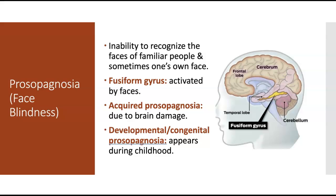Oliver Sacks, the neurologist and author, had prosopagnosia and had difficulties recognizing his own face. The reason this occurs is found in the temporal lobe — a region called the fusiform gyrus, which becomes activated when we look at a face and allows us to recognize others' faces and our own. This disorder can be acquired — meaning it's due to brain damage or deterioration — or it can be developmental or congenital prosopagnosia, which appears during childhood as something a person is essentially born with, rather than something suddenly acquired due to brain damage.